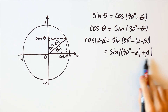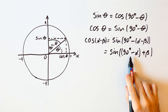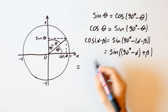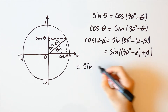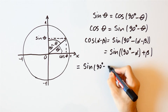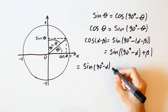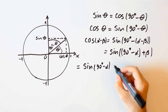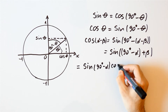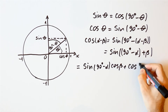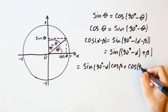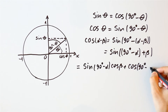But we know the formula for this from a previous video, so this is equal to the sine of 90 degrees minus alpha times the cosine of beta plus the cosine of 90 degrees minus alpha times the sine of beta.